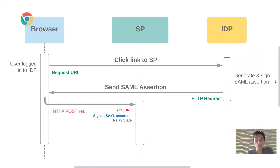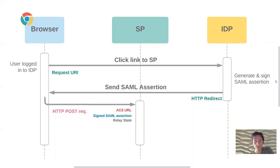It'll happen through an HTTP redirect, so the browser will be redirected to the service provider with the signed assertion included. That'll be sent to the assertion consumer service URL. There's also an attribute within the assertion — the relay state — which can be used in the identity provider flow to redirect the user to a specific page that the identity provider wants to send them to.